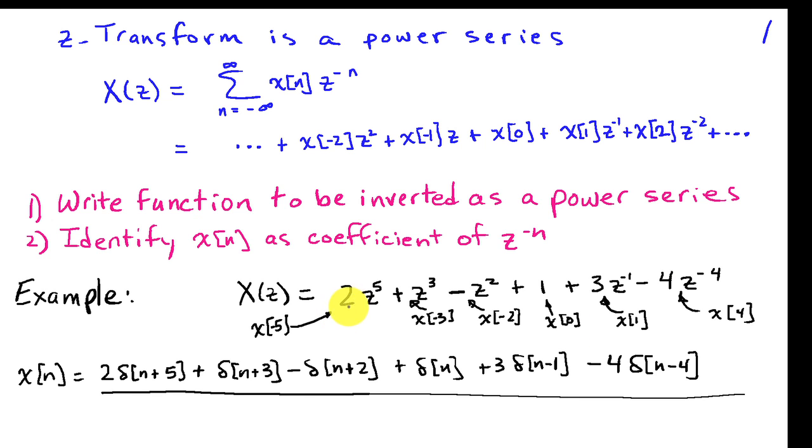In particular, this first coefficient here, 2, is on Z to the fifth. Well, that's the coefficient associated with X of minus 5. And then in front of Z to the cube, we have 1. So that's going to be X of minus 3.